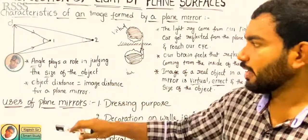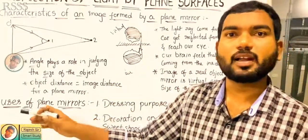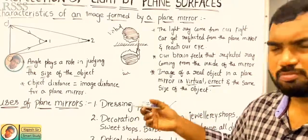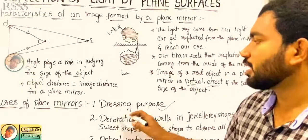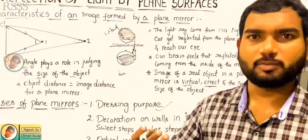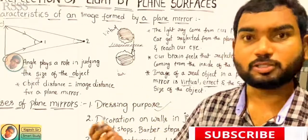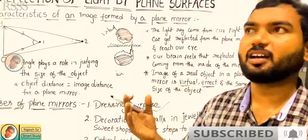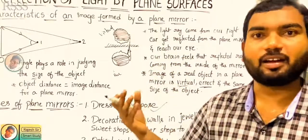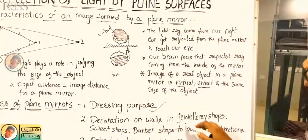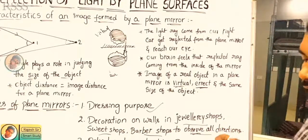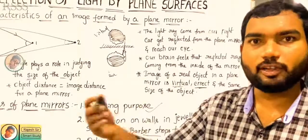Next, let's talk about the uses of plane mirrors. Plane mirrors have very good uses. What we have seen is: in dressing purposes, it is a simple mirror. Dressing purposes and decoration for walls. We also use mirrors for decoration. In marriage ceremonies, we can see the wall and light — wide mirrors are very attractive. Look at the jewelry shops and barbershops, so you can see in all directions.